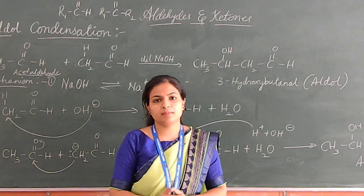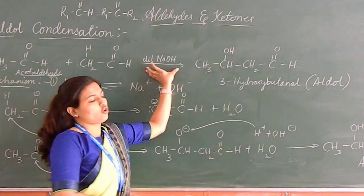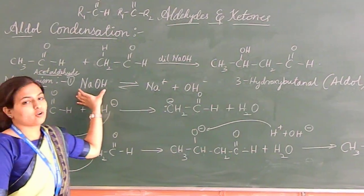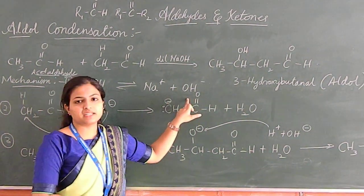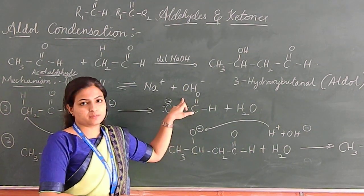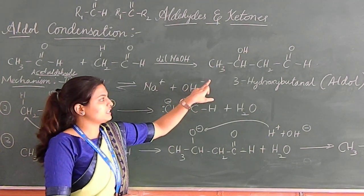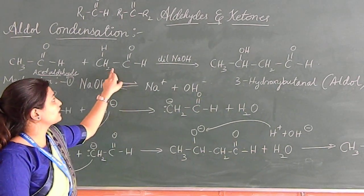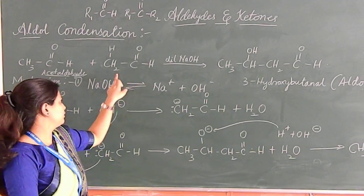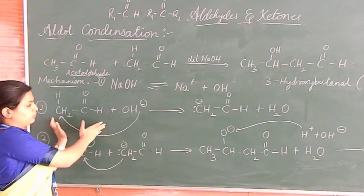We have to study the mechanism. First we have a strong base, that is sodium hydroxide. This sodium hydroxide dissociates into Na+ and OH-. OH- is a nucleophile. It is a rich species of electron, that is why it is having a minus charge. Now, this OH- will go and attack one of the acetaldehyde units. We have an acetaldehyde unit here.